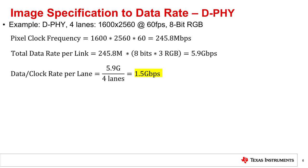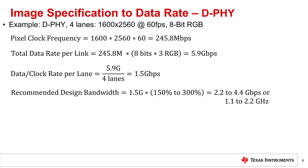But we want to make sure that our system is designed with enough margin to get excellent performance at this bit rate. Typically, a 1.5 to 3 times margin is a good range to ensure excellent system performance without too much overkill. Therefore, a 2.2 to 4.4 gigabits per second design is recommended. Finally, since we are sampling twice per clock cycle, our design bandwidth would be half our data rate.